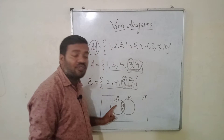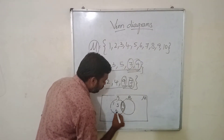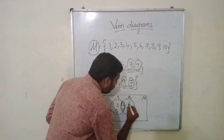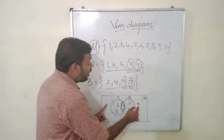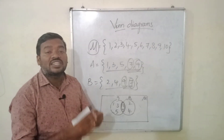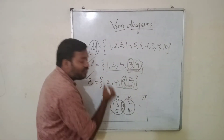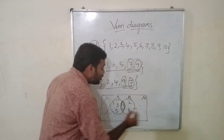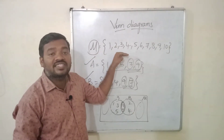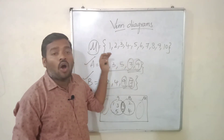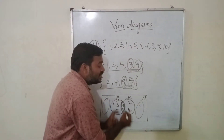Now let's go for the elements of A which are not common with B. The other elements of A are 1, 3, 5. And for B, the separate elements are 2 and 4. Now we have the universal set also. If the universal set is not given, you need not write elements outside these two sets. But here, universal set is defined. So we have to write all other elements outside A and B.